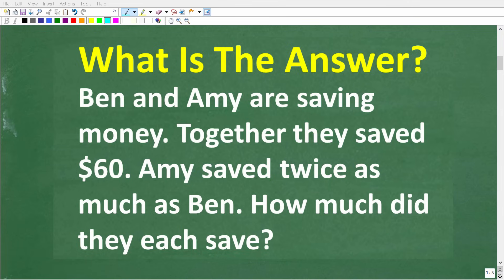Let's see the solution to this problem now. The first step in solving any math problem is to make sure you actually understand the question. And the question here is: how much did each person save? So we are really looking for two amounts. How much did Ben save and how much did Amy save?